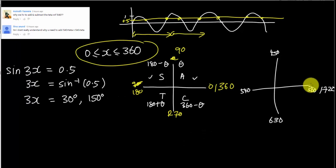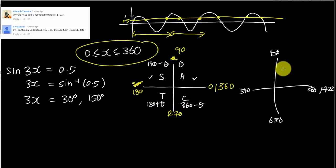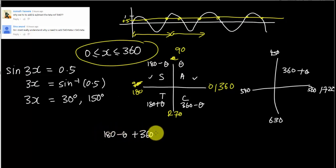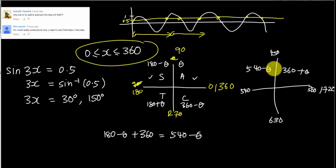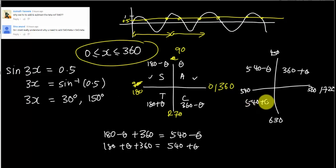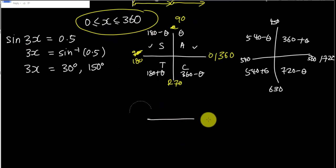When you rotate the second round, all the angles from the first round just get plus 360. So the first quadrant angle becomes 360 plus delta. The second quadrant, which was 180 minus delta, plus 360 gives you 540 minus delta. The third quadrant becomes 540 plus delta, and the fourth quadrant becomes 720 minus delta. That's exactly why 540 minus delta and 540 plus delta appear.